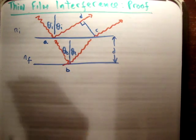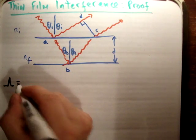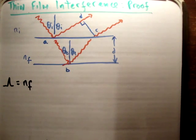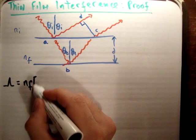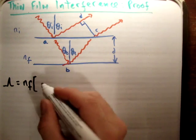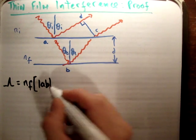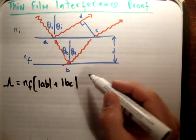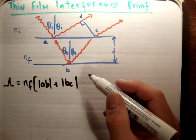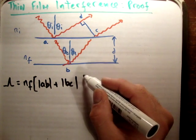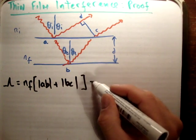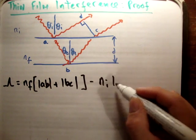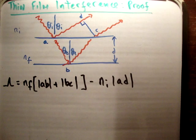So what we can say is the optical path difference equals the distance travelled in the second medium, whose refractive index is n sub f, times the distance from AB plus the distance BC. And we need to take away from that the distance travelled in the initial medium, we'll say usually it's air, and the distance travelled AD.